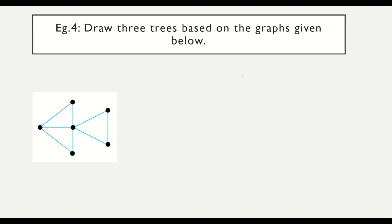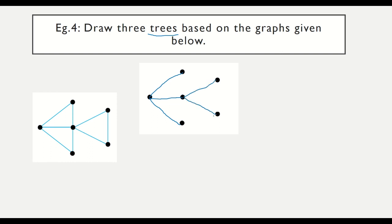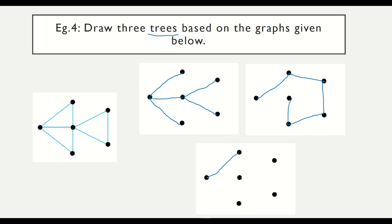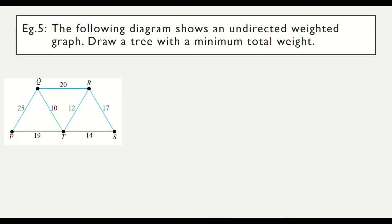Example 4: draw three trees based on the given graph. The number of vertices must remain the same. The graph has six vertices, so each tree should have five edges. You can connect any five edges to form a tree — there are various valid arrangements, as shown in the three examples.